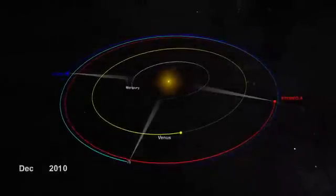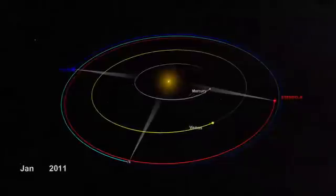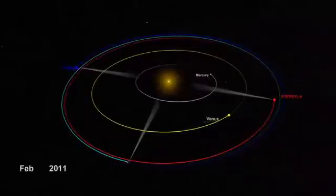Now STEREO A and B are almost exactly opposite each other, and for the first time in human history, we have a view of the entire Sun.